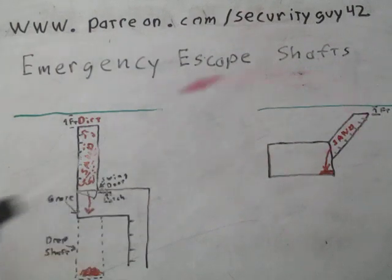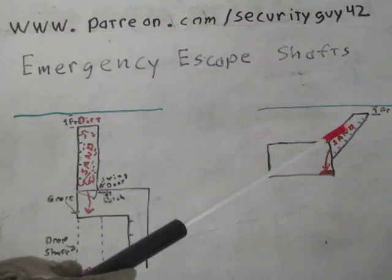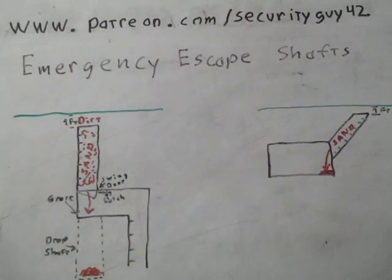Now I have two examples here. One would be from a first level. This one would be from farther down - your second level, third level, fourth level. We'll start with the simplest one first, over here. Your escape shafts are either going to be vertical or they're going to be angled. The easiest for you to get out will be the angled ones.